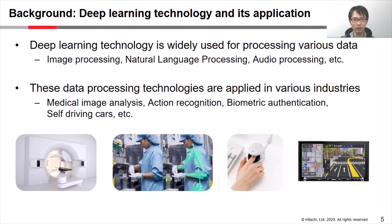Our company Hitachi has a lot of products and services in these industries. Image processing is especially used in such industries. For example, image processing is applied to medical image analysis, action recognition, biometrics, and self-driving cars.